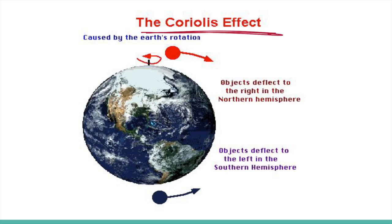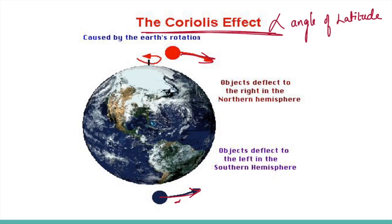The Coriolis effect: the rotation of the Earth about its axis affects the direction of wind, and this force is called the Coriolis force. It deflects wind to the right in the Northern Hemisphere and to the left in the Southern Hemisphere. The deflection is more when wind velocity is high. The Coriolis force is directly proportional to the angle of latitude — maximum at the poles and completely absent at the equator.